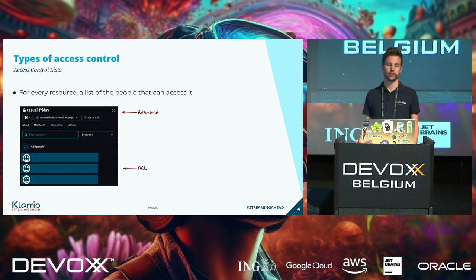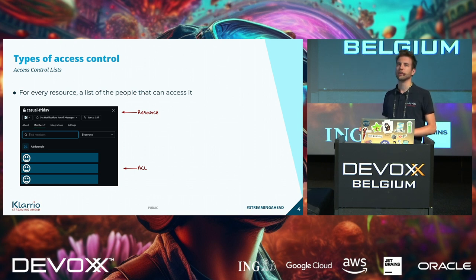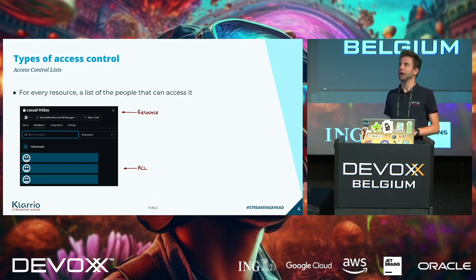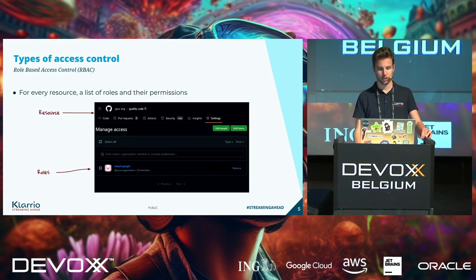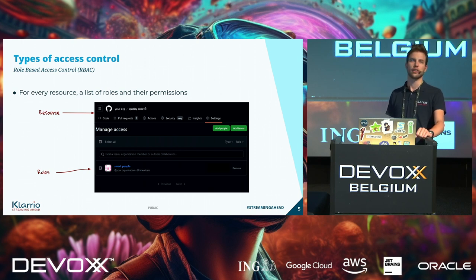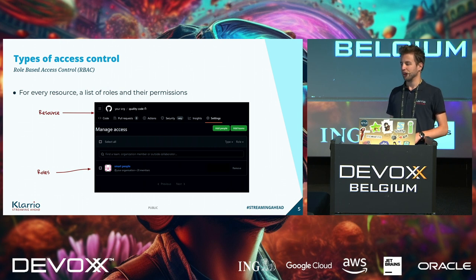When we talk about authorization, you could split it up into different models. One very simple authorization model is an access control list that we all know. One example is a Slack channel set to private where you manage a whole list of people that get access. When someone joins, you have to individually add them to every channel, which can get painful. That's why role-based access control, RBAC, was invented — you start grouping users together. In a GitHub organization, you might add a developers group and when someone joins, you just add them to that group and they get access everywhere they need to.